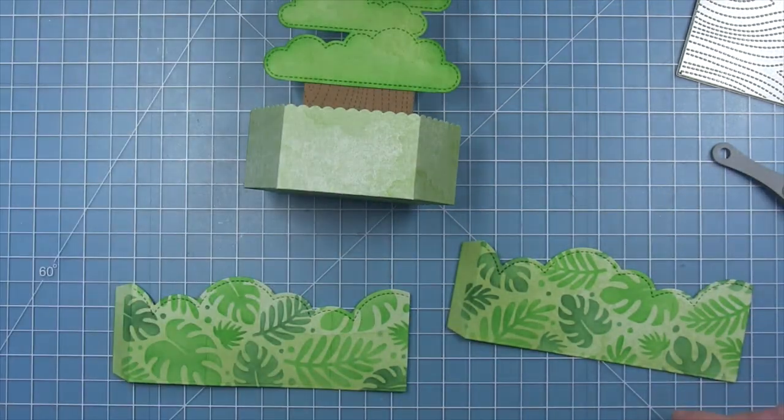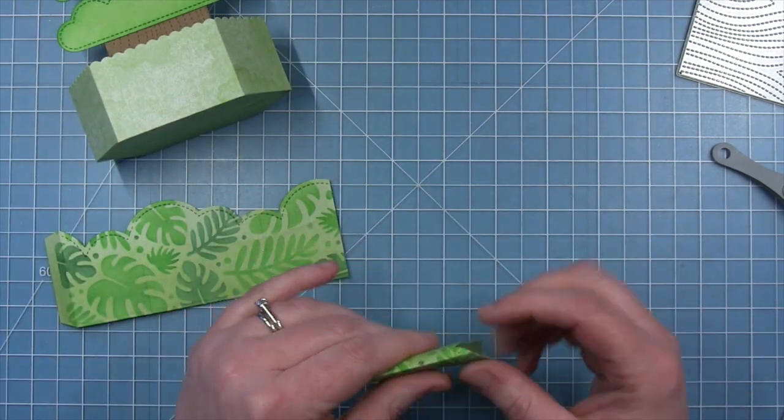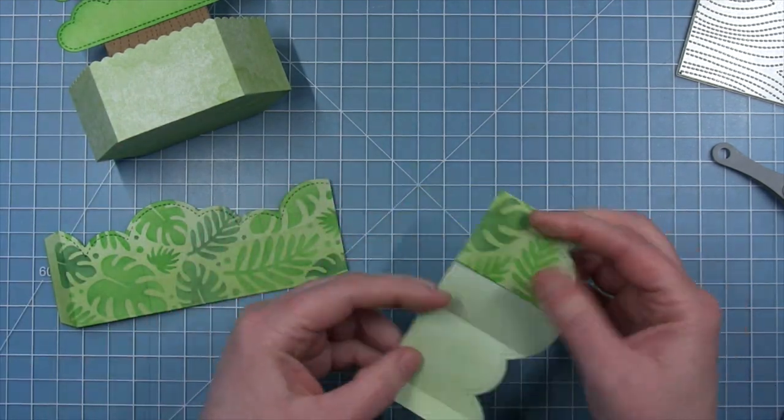Now for my cloud wraparound, I'm going to fold this on the score lines that the die created as well.